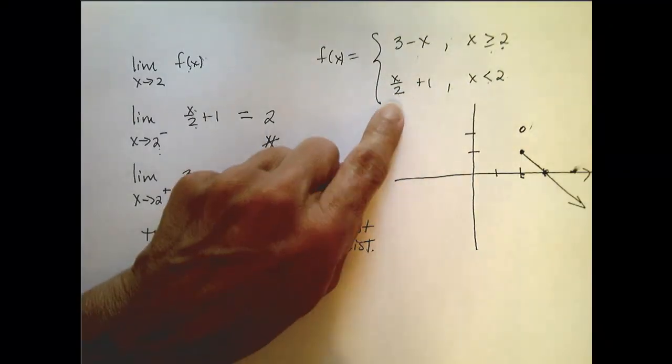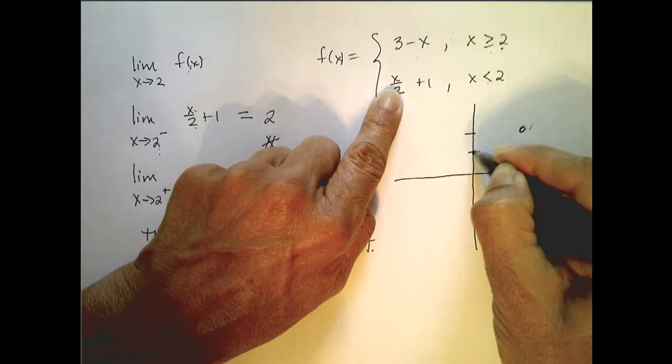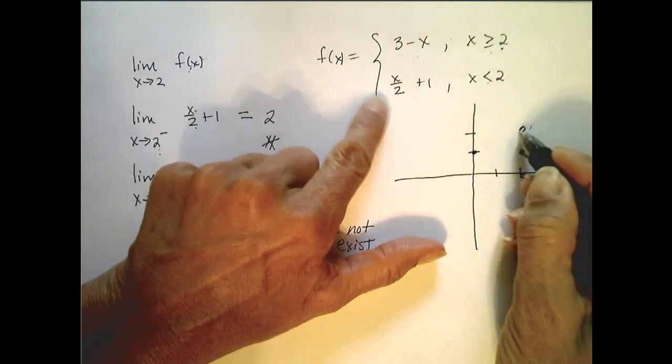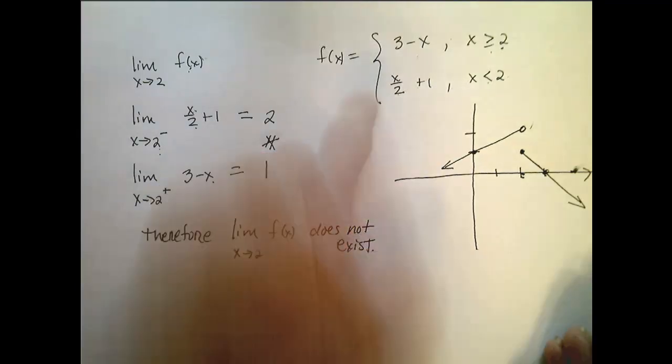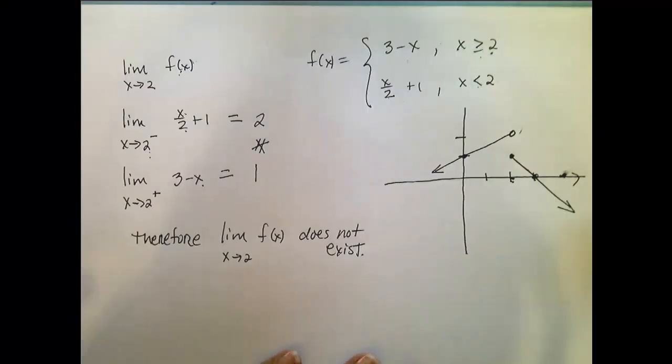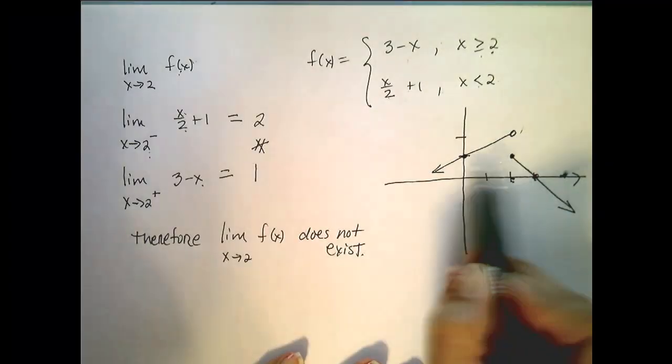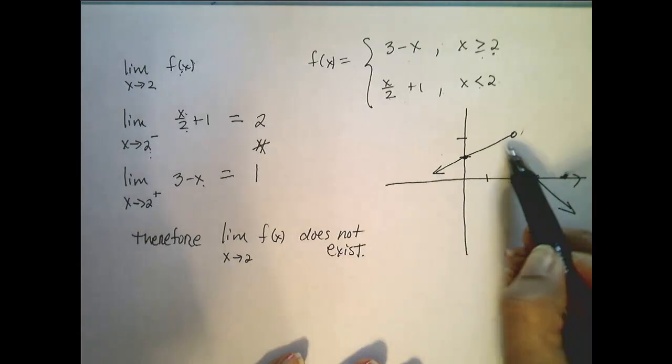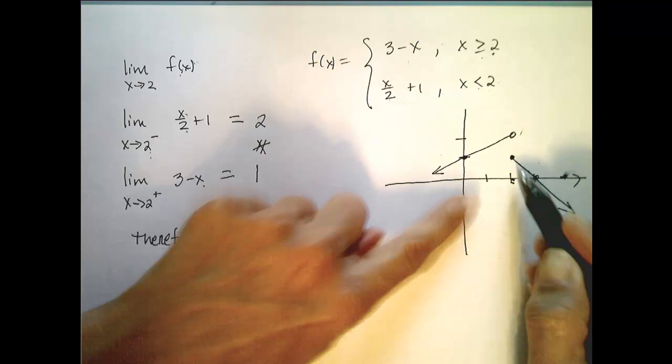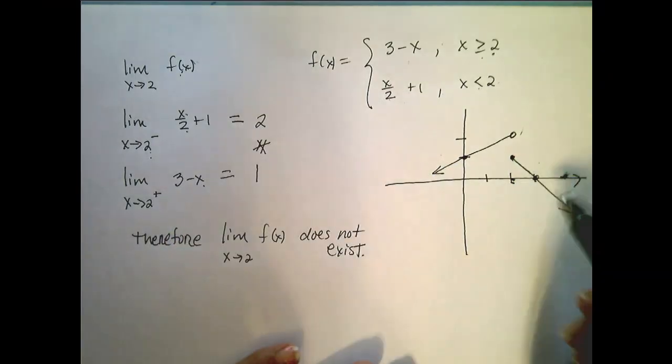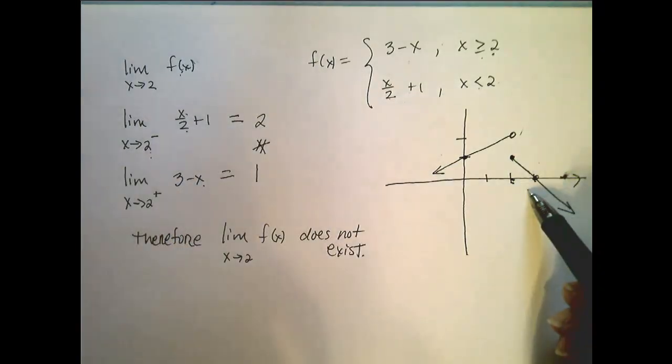When x is 0, my function is 1, so I have this line. Now, let's look at the limit question graphically. The question is, what's the limit of this function as x approaches 2? Well clearly, from the left, my function is approaching 2, and from the right, my function is approaching 1. So we can see this both graphically and algebraically.